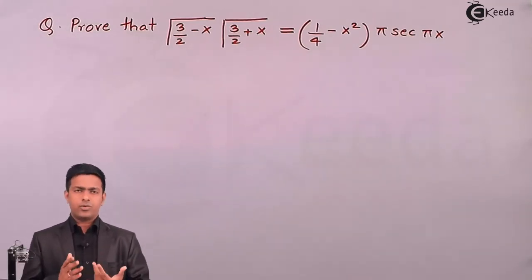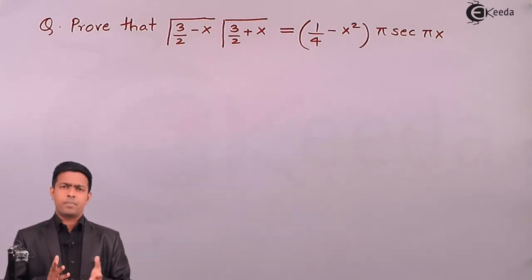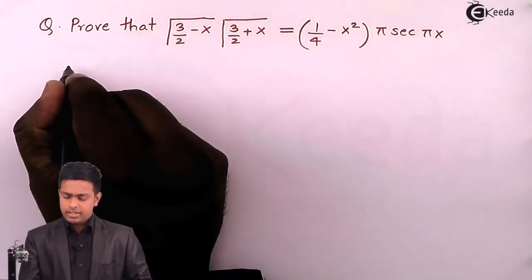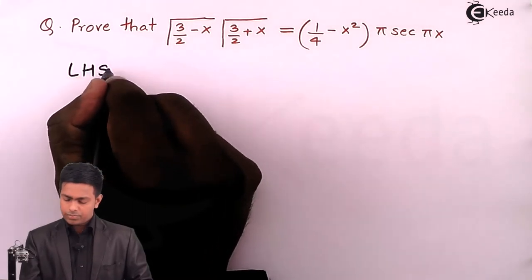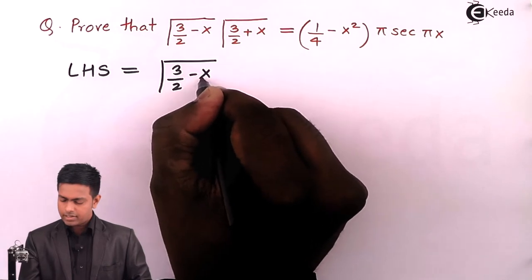If you see the left-hand side, we have two gamma functions. For the gamma functions we have a number of properties, so we can apply the property to get the right-hand side. Let's start with the left-hand side: LHS equals gamma(3/2 - x) times gamma(3/2 + x).